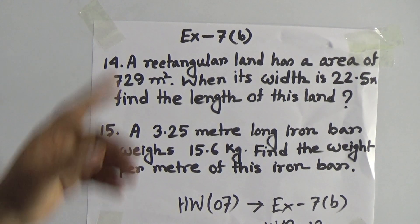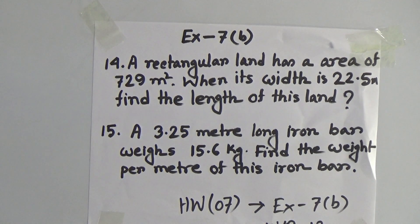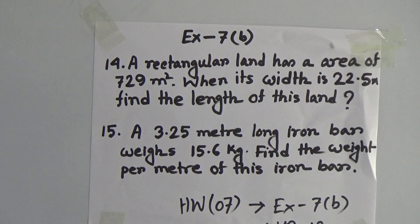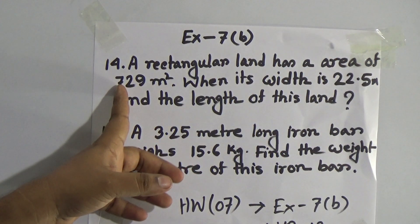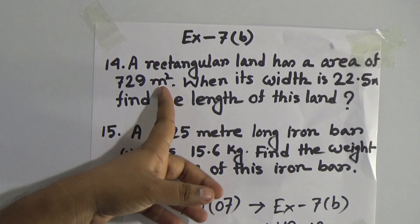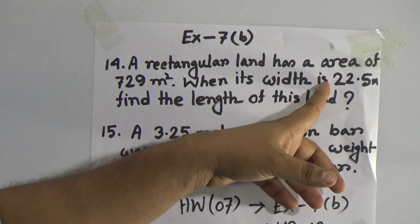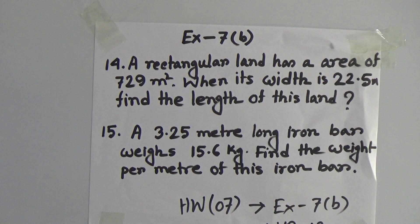At first we solve question number 14. In order to solve question number 14, at first we read the question. A rectangular land has an area of 729 meter square. When its width is 22.5 meter, find the length of this land. So how can we solve this math? In order to solve this math, at first we need to know the area formula of rectangle.